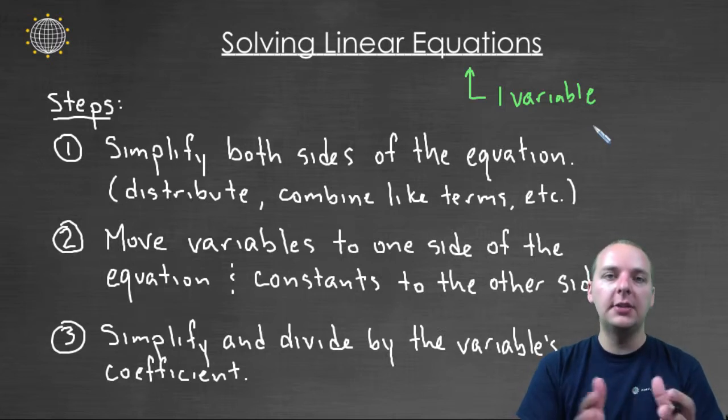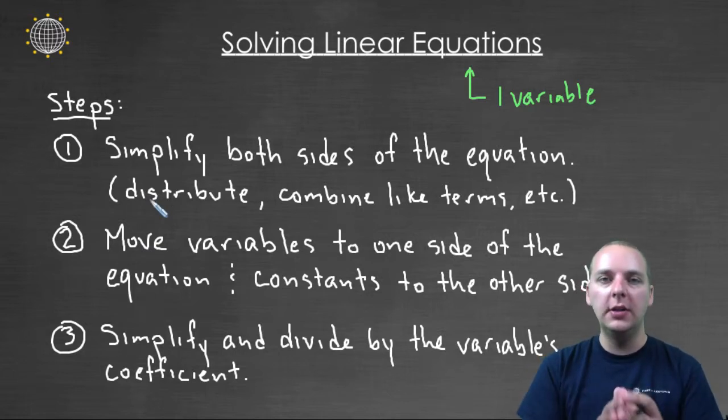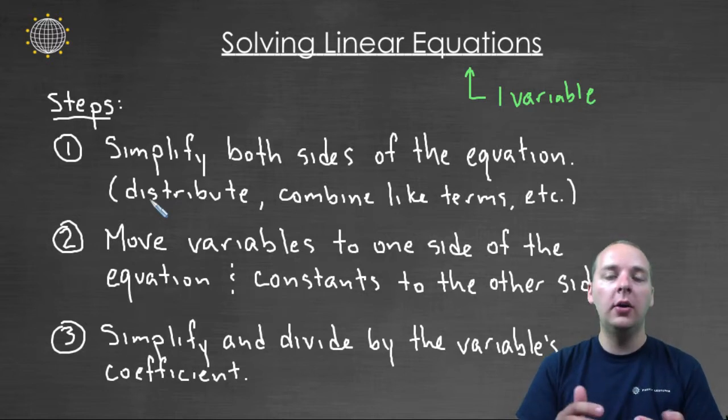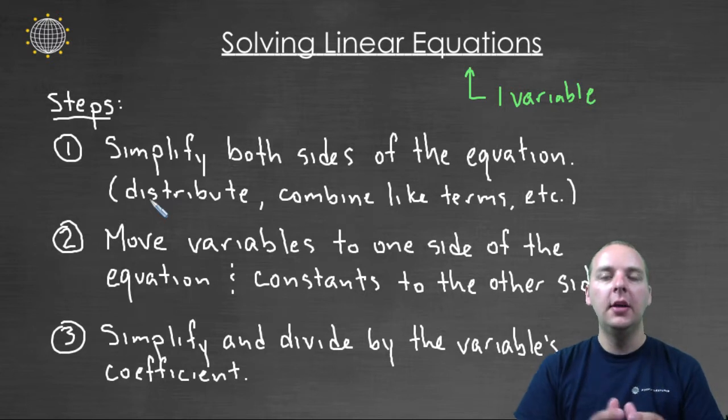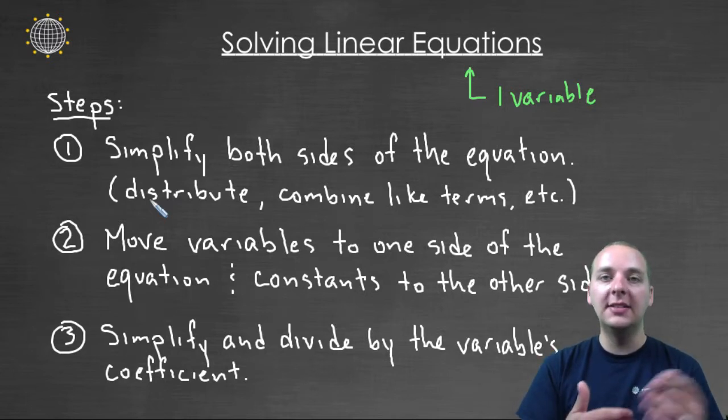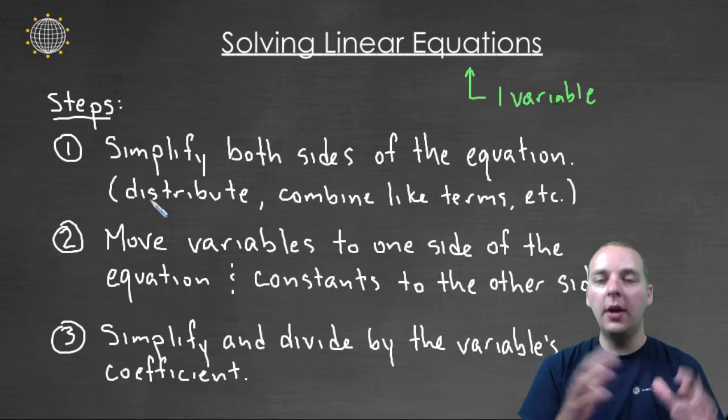Okay so here's the steps, here's how we solve a linear equation. The first step is you have to simplify both sides of the equation, the left side and the right side. And that might require distributing a constant across a parenthesis, possibly combining like terms if you have terms that have the same variable that you can combine together. Maybe combining some constants together, whatever you need to do you have to simplify both sides.